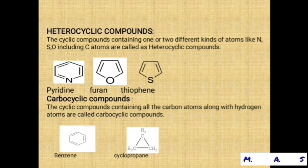Now, how are cyclic compounds? For example, hydrogen, sulfur, oxygen, and carbon atoms are called as heterocyclic compounds. Examples include pyridine, furan, and thiophene. When nitrogen is present, the structure is called pyridine; oxygen gives furan; and sulfur gives thiophene.